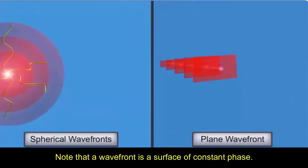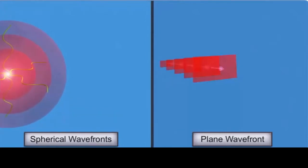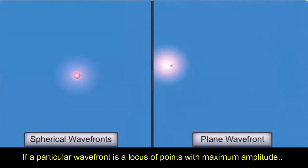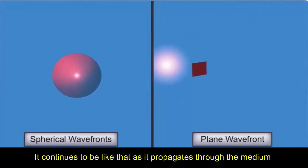Note that a wavefront is a surface of constant phase. If a particular wavefront is a locus of points with maximum amplitude, it continues to be like that as it propagates through the medium.